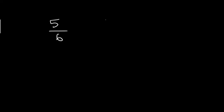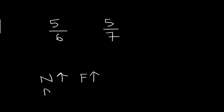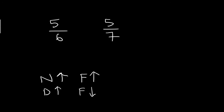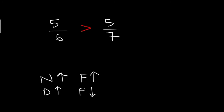Next, let us look at another example: 5 by 6 and 5 by 7. Here the denominators are not the same, but the numerators are the same — that is 5. Here is a tip: when the numerator of the fraction increases, the value of the fraction increases. As the value of the denominator increases, the value of the fraction decreases. Here 7 is greater than 6, therefore 5 by 7 is lesser than 5 by 6. So 5 by 6 is the greatest value.